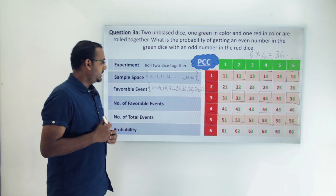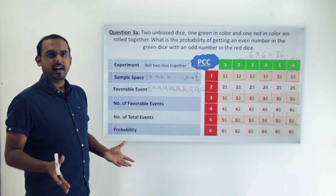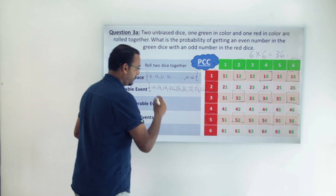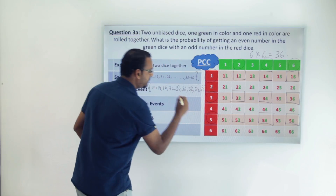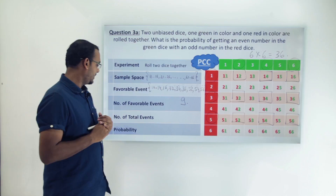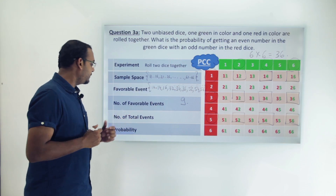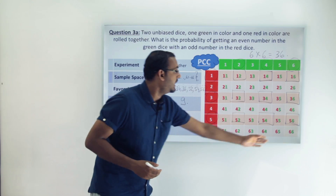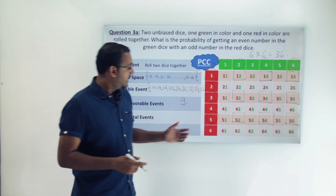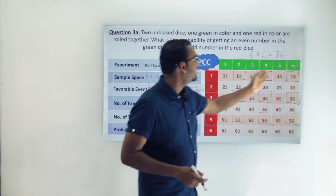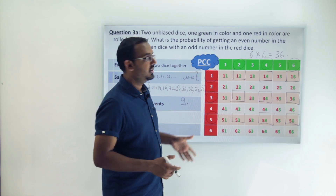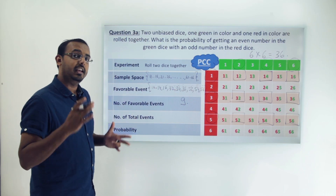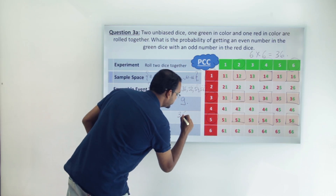These nine values form our favorable event set. The number of favorable events is the total count of values in that set, which is 1, 2, 3 — 1, 2, 3 — 1, 2, 3, giving us 9 values in total. The number of total events is 36, since our sample space has 6 rows and 6 columns, giving 6 × 6 = 36 elementary outcomes.